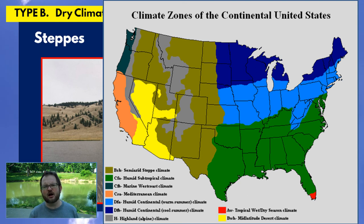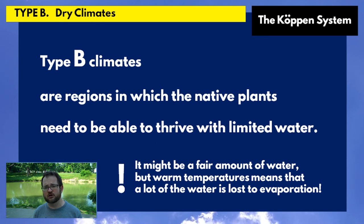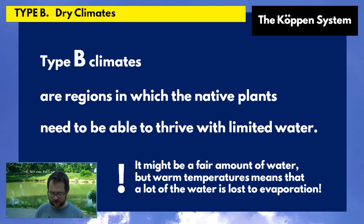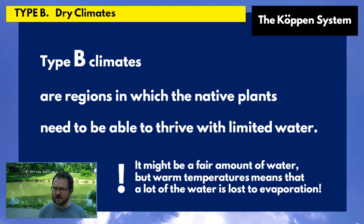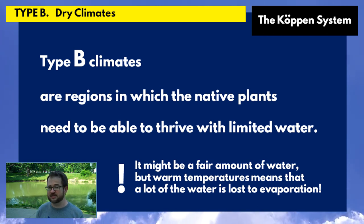Type B climates are pretty darn dry. The native plants have to deal with relatively little precipitation that also varies a lot from year to year — they need to thrive with limited water. In some cases it's not a large amount: the Sahara gets relatively little precipitation, and the Atacama Desert might get no precipitation in a given year.